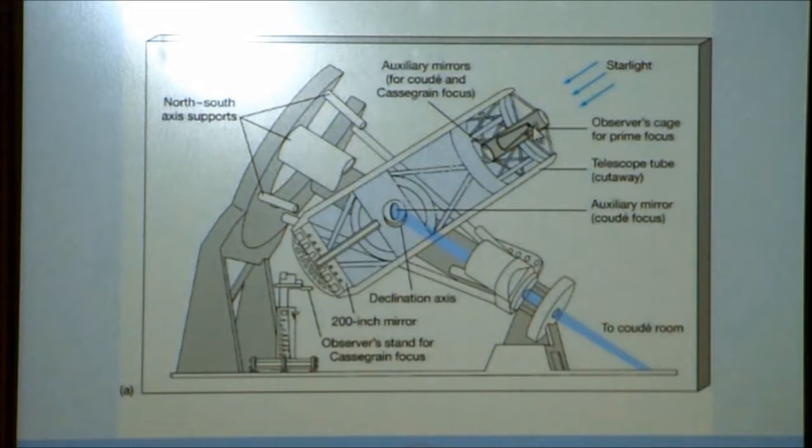We still use prime focus. It's all digital now. You can stick another mirror here, secondary mirror, sending the light back down through a hole in the primary, Cassegrain. You can attach instruments to the back of the telescope. It also has a tertiary that can be used to send the light down the main axis to the room below, called the Coudé room. You can turn the tertiary to the side, sending the light out into these two support arms.